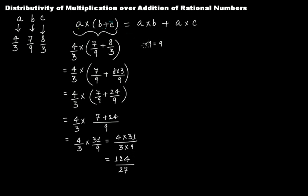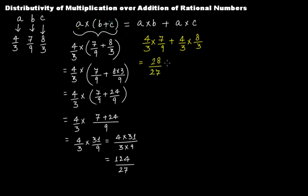Now let's solve a times b plus a times c. A is 4 over 3, b is 7 over 9, so a times b is 4 times 7 over 3 times 9 — that is 28 over 27. And a times c is 4 over 3 times 8 over 3 — that is 32 over 9. Now we have to add 28 over 27 and 32 over 9. Since the denominators are different, we take the LCM of 27 and 9, which is 27.